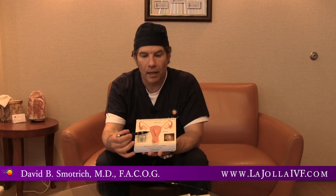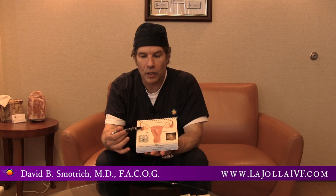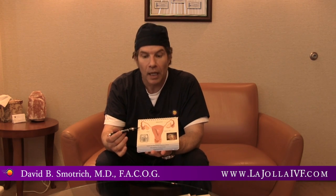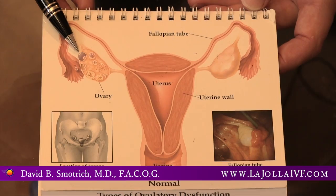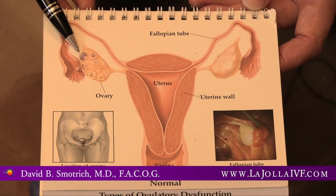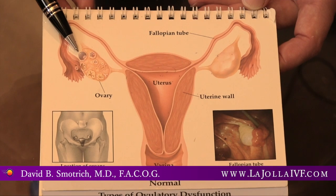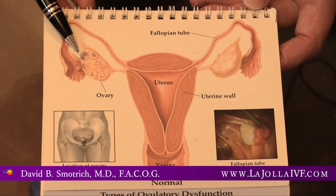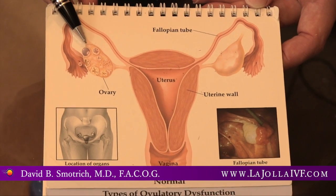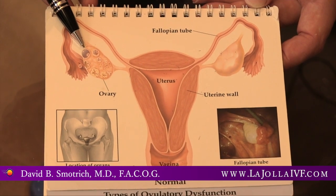This is a schematic of the uterus and the ovaries. Every woman has all the number of eggs that they're ever going to have at the time of birth. At the time of puberty, they have about 200,000 follicles. Follicles are small, fluid-filled collections that we can see on ultrasound within the ovary that all have the potential to become eggs.